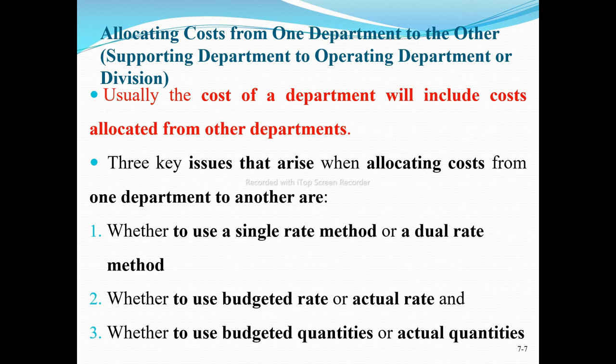One of the three key issues is whether to use budgeted or actual quantities. When using budgeted quantity, it represents the planned level of activity. When using actual quantity, it represents the current actual level of activity consumed.